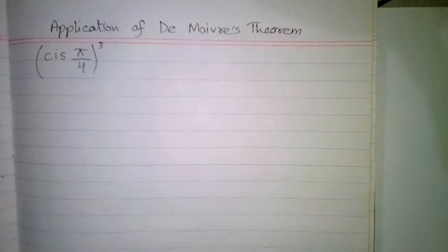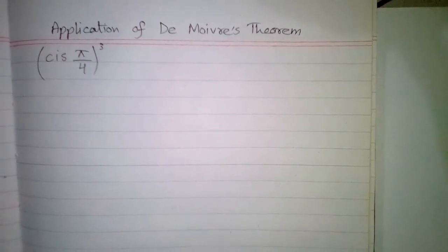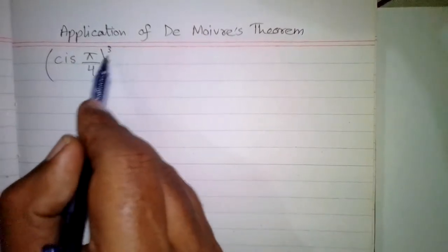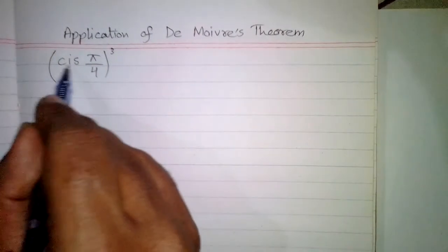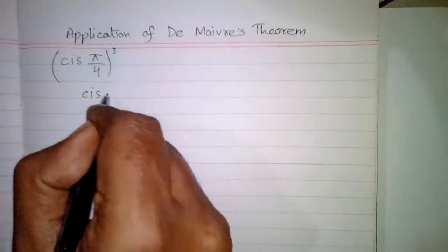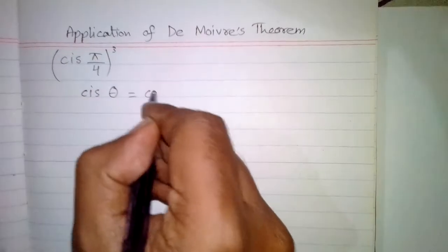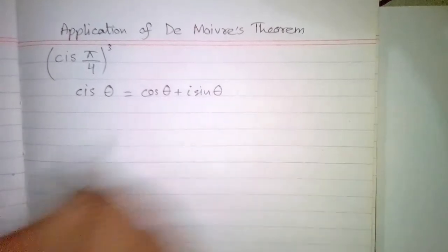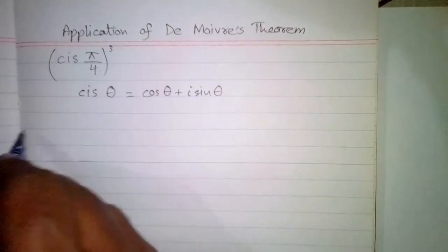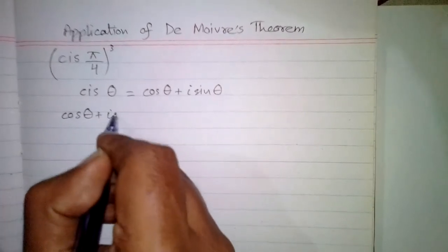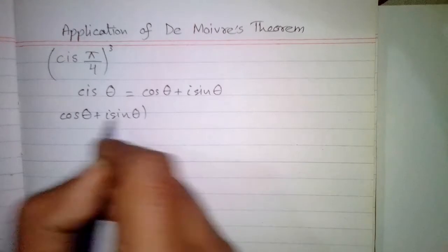In this video we will discuss the application of De Moivre's theorem. We have to find cis(π/4) raised to the power 3. First of all, cis θ means cos θ plus iota sine θ.